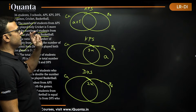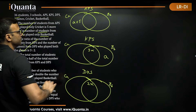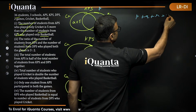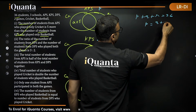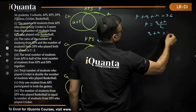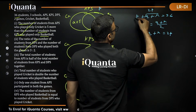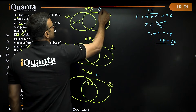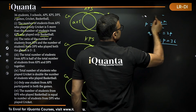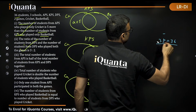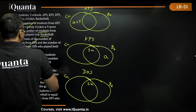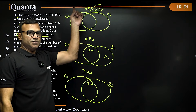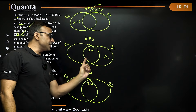Overall total is 36. Let us say APS total is P, KPS total is Q, DPS total is R. So P plus Q plus R equals 36. The condition says P equals (Q plus R) divided by 2, so Q plus R equals 2P. Substituting, P plus 2P equals 3P equals 36, so P equals 12. That means the total number of students in APS is 12, and the total for KPS and DPS together is 36 minus 12, which is 24.